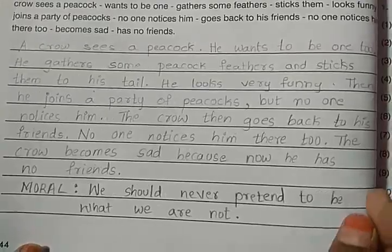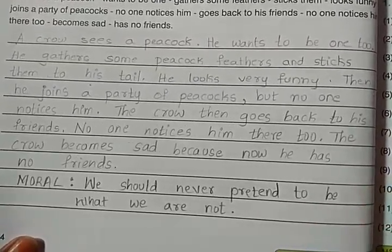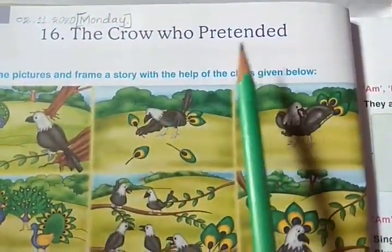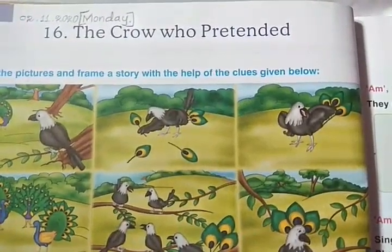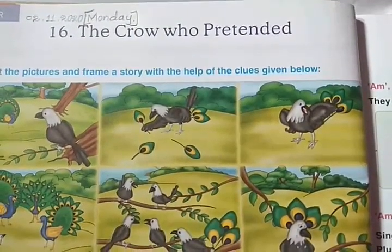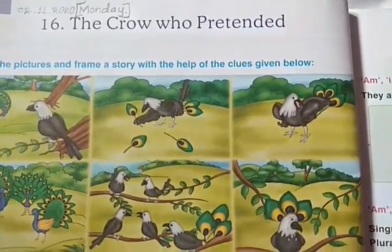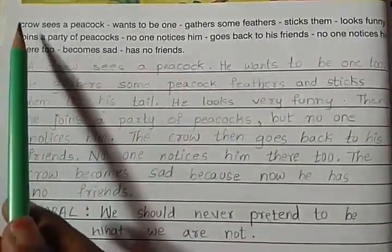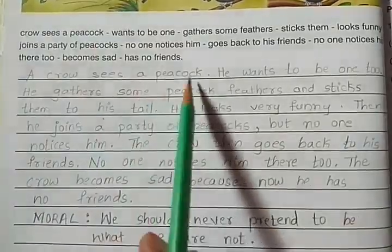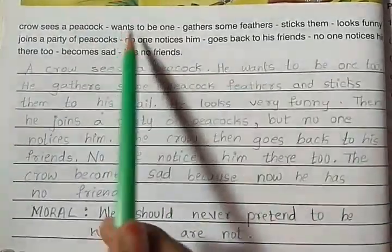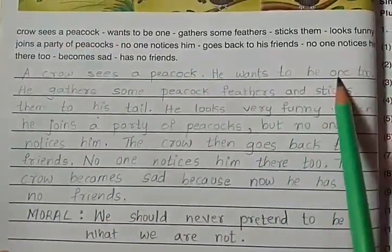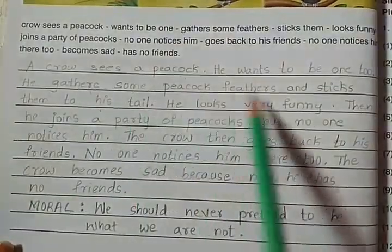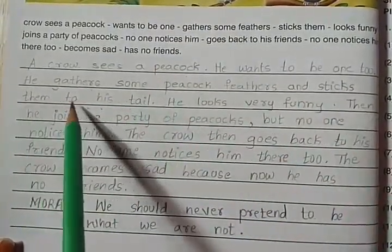Like this we can write the story. What is the title of the story? The Crow Who Pretended. 'Pretended' means not genuine — to act. The crow is acting like a peacock here. Let us read the story. A crow sees a peacock. He wants to be one too. He gathers some peacock feathers and sticks them to his tail.